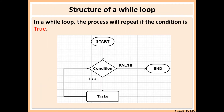Here is a flowchart of a simple while loop. You start and then you've got a condition. If the condition is true, you will do the task and the loop will start. Once it gets to the end of the loop, it will check the condition again. If that condition is still true, it will keep looping. It will only stop when that condition becomes false. When it's false, it will break out of the loop.